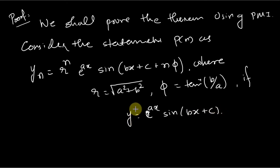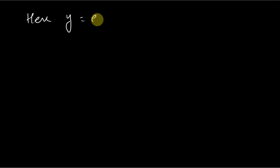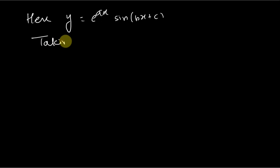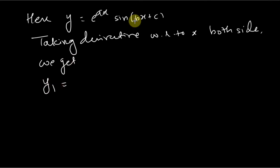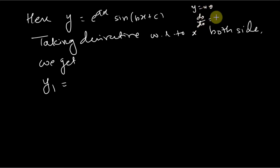The first step is to prove the result is true for n = 1. Given y = e^(ax) sin(bx + c), taking the derivative with respect to x on both sides, we get y₁. The derivative of this product of two functions requires the product rule: if y = u·v, then dy/dx = u·(dv/dx) + v·(du/dx).